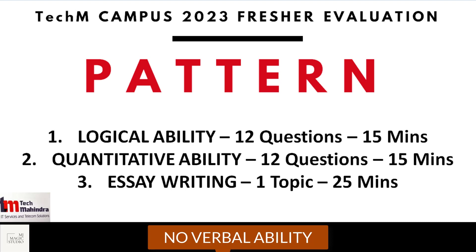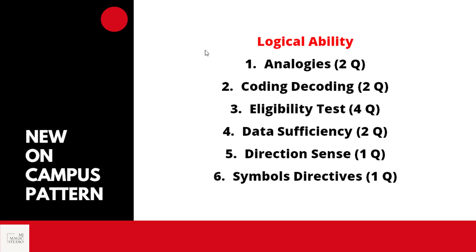Going back to logical ability — section one, 12 questions need to be answered in 15 minutes. This is a new on-campus pattern where one question will come at a time on the screen. You need to answer that, and then only you can move to the next question, going one by one. If you want to skip, you can skip, but then you won't be able to come back to the question you have already skipped. There is no negative marking, so why skip? Just try to attempt.